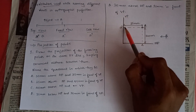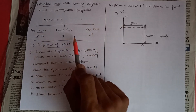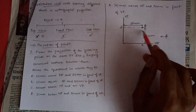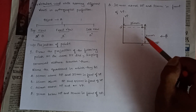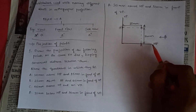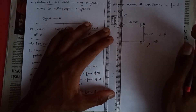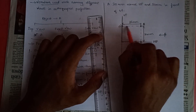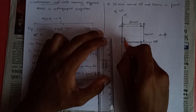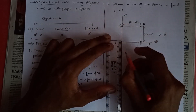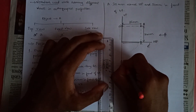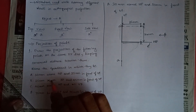When you extend point A and join it to VP, it meets at a point — that is A-bar, which is the front view, clearly visible to the observer. When you join point A to HP, you get the top view. Since the top view A is a view on HP, it is rotated clockwise 90 degrees so it becomes visible to the observer. The 35 mm 'in front' distance comes below the XY line, and you name this point as A.